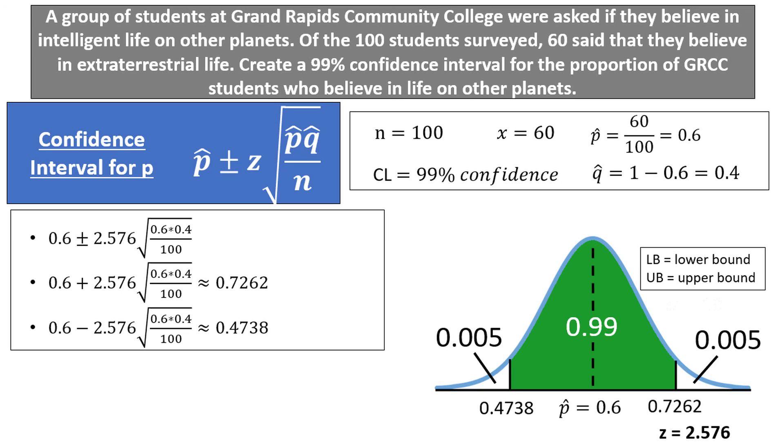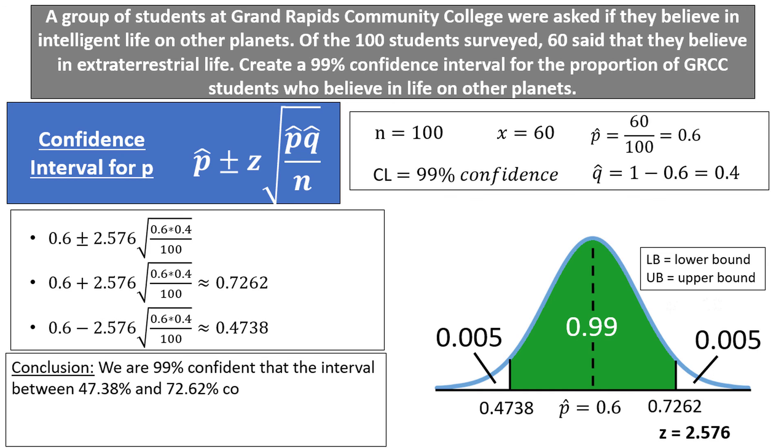Okay, all we have left is the conclusion. We are 99% confident that the interval between 47.38% and 72.62% contains the population proportion of Grand Rapids Community College students who believe in extraterrestrial life. I like to state my proportion conclusions in percentages, as they typically make more sense to the general public. And we are done!